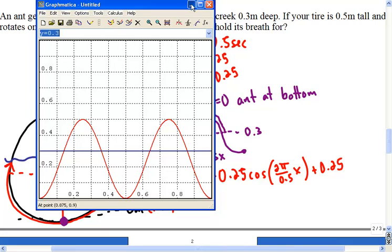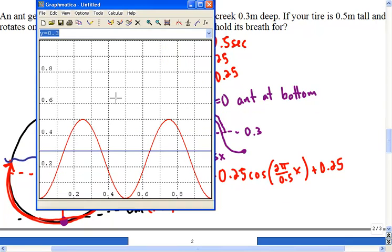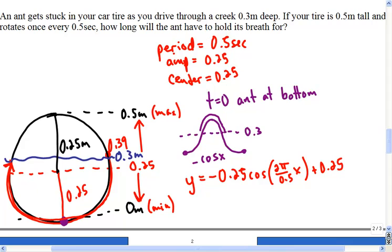It looks like 0.359 would be that first intersection, and 0.641 would be the second. So the ant has started its descent. This would be the time 0.359, and this was 0.641.